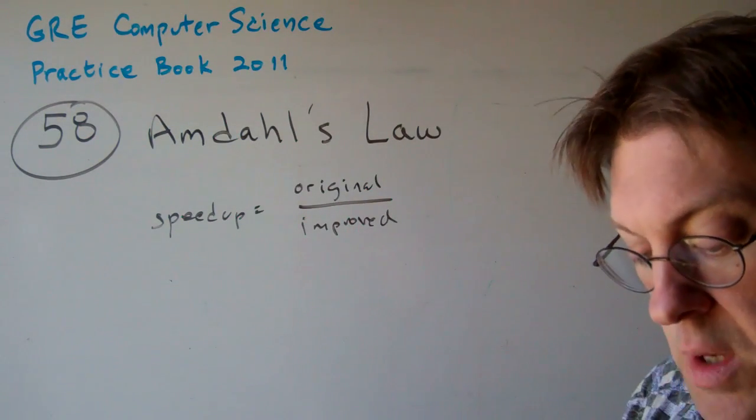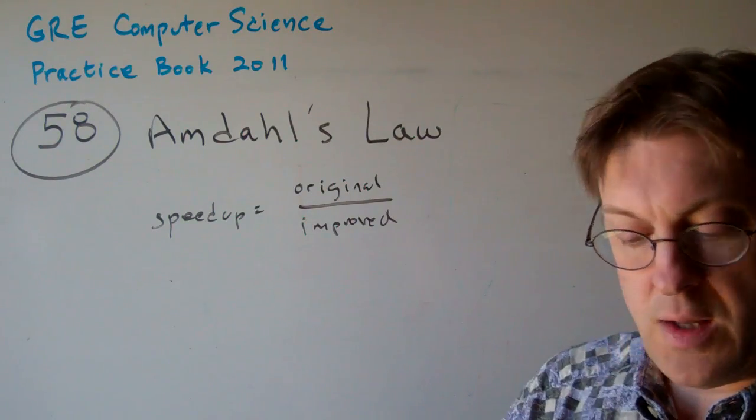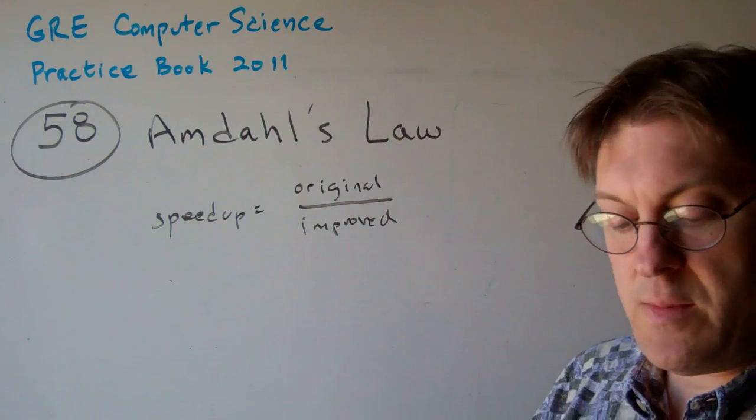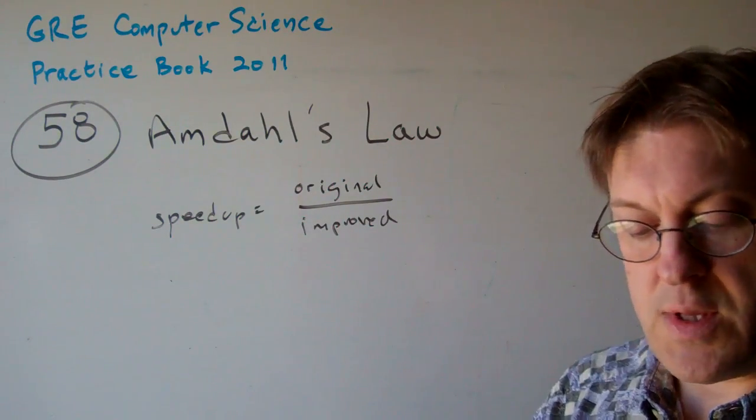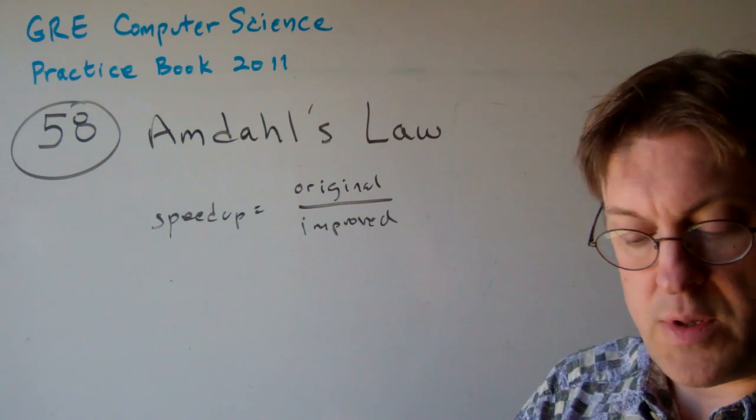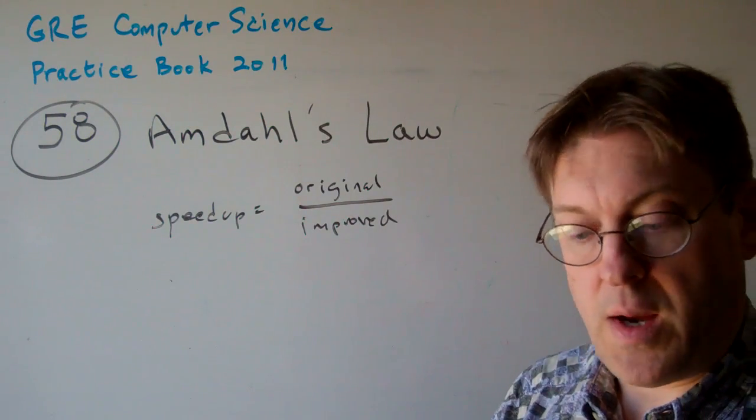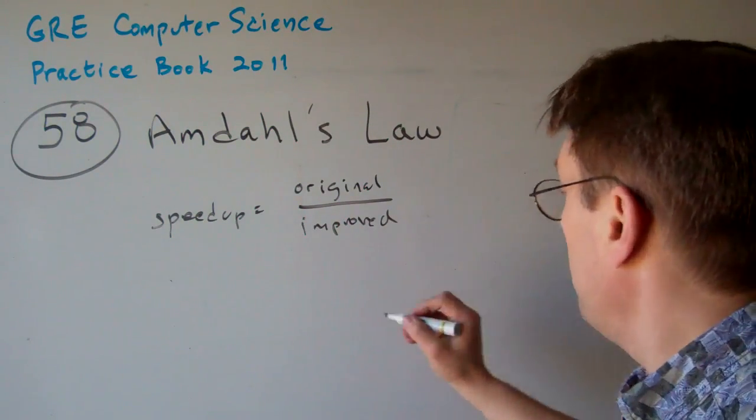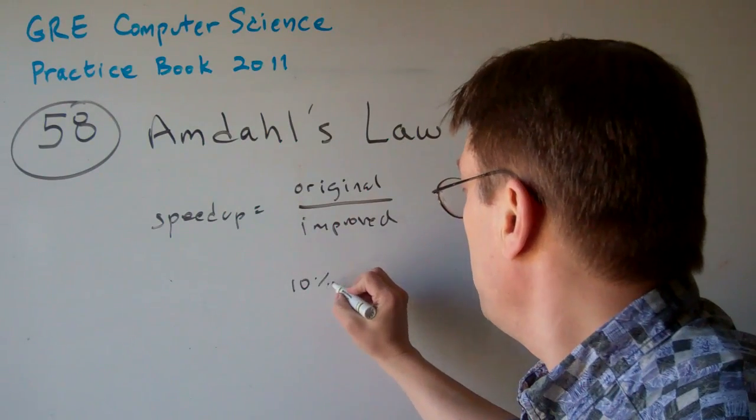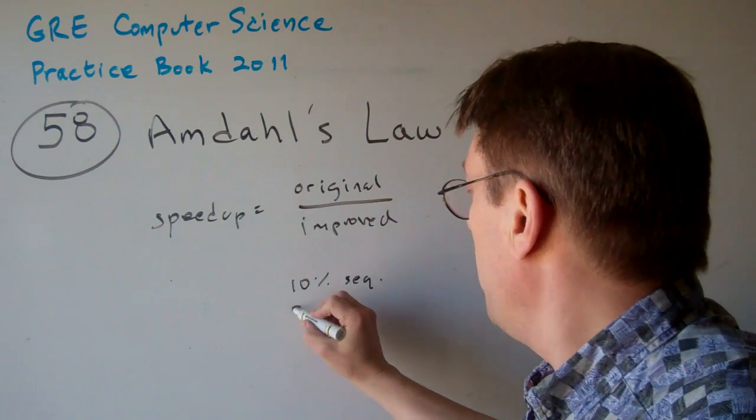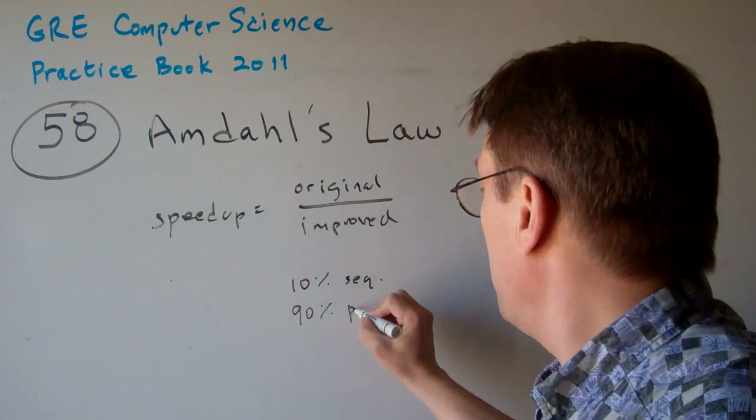According to Amdahl's law, approximately how much speedup could we expect for an unlimited number of processors if 10% of a program is sequential and the remaining parts ideally parallel? So we have 10% sequential and then 90% parallel.